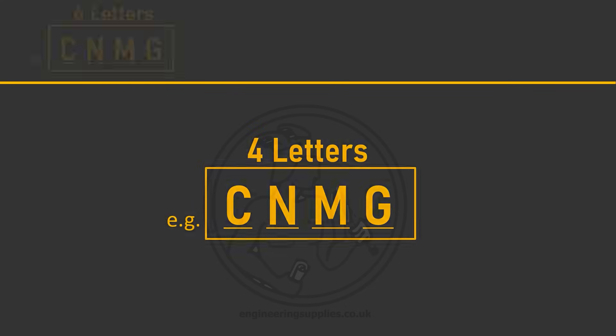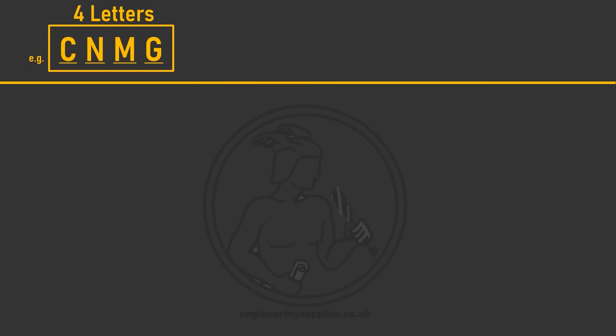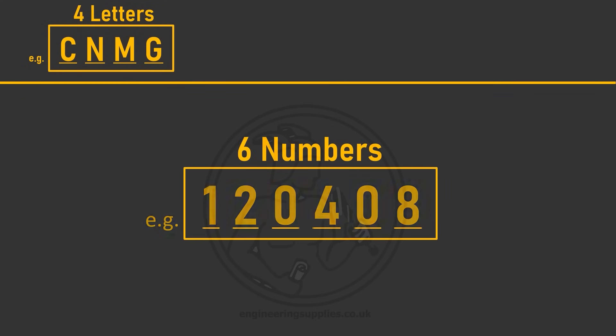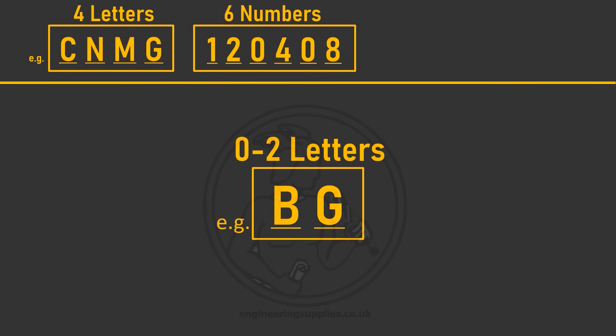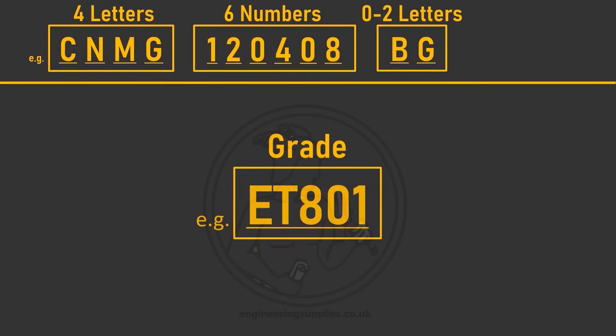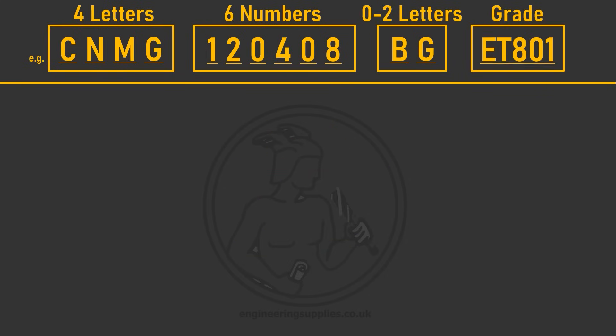The general ISO code for a turning insert falls into a sequence of four letters that describe the overall shape, six numbers that define the size, zero to two letters that signify a chip breaker, and a grade.